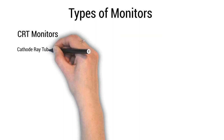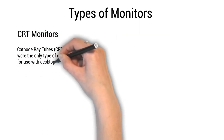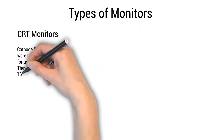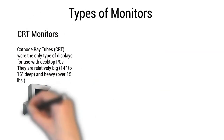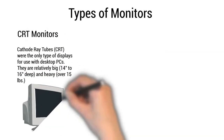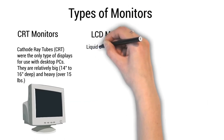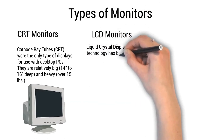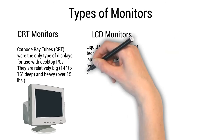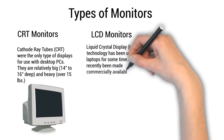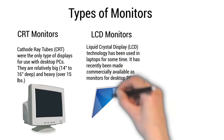Types of monitors: Cathode ray tubes, or CRT, were the only type of displays for use with desktop PCs. They are relatively big — 14 to 16 inches deep — and heavy, over 15 pounds. Liquid crystal display, or LCD, technology has been used in laptops for some time and has recently been made commercially available as monitors for desktop PCs.